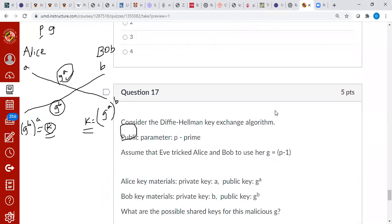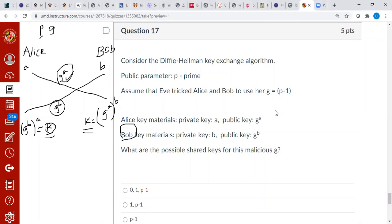The next problem is also a Diffie-Hellman related problem. So we can use the same picture. Let's read through this problem. We are talking about Diffie-Hellman again. Public parameter P, we already wrote it here. Eve is tricking Alice and Bob to use her G, which is P minus one. We know Alice's key material, right? Private key is A, public key is G power A, because she's sending that. Bob's public key is G power B, private key is B. The question is, what are the possible shared keys for this malicious G?